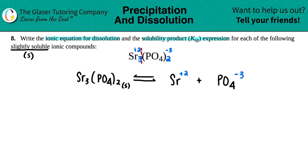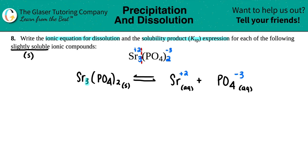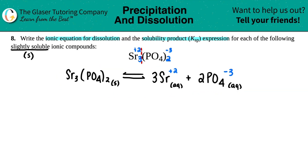Since we have charged ions, these have to be aqueous, so I label both as (aq). We also have to balance the equation — there were three strontiums, so I put a coefficient of 3 in front of Sr²⁺, and there were two phosphates, so I put a 2 in front of PO₄³⁻. Now I have the balanced ionic equation for dissolution — that part is done.